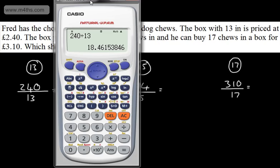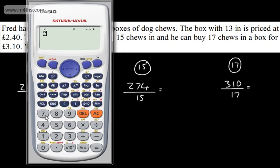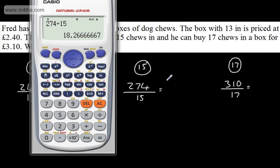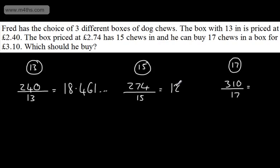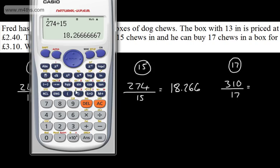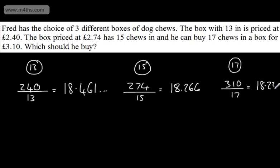If we go on the next one, what have we got on the next one? We've got 274. So 274 divided by 15. So 274 divided by 15 gives me 18.266. So let's write this in. So 18.266 and dot dot dot and so on and so forth. And then if we look at the last one, 310 divided by 17. So 310 divided by 17, that gives me 18.235. So 18.235 dot dot dot and so on and so forth.